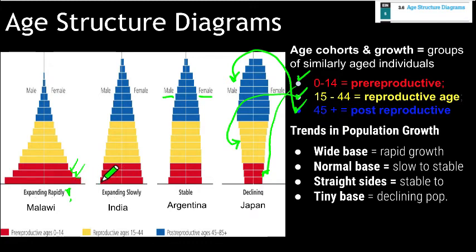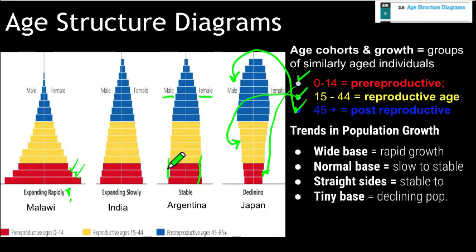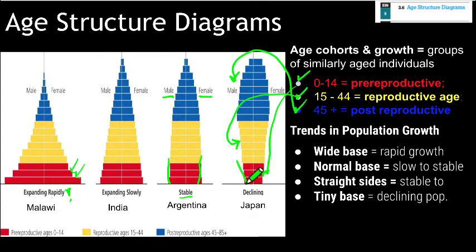As the percentage of young people decreases, so does the growth rate — this is the 'expanding slowly' category. India is still growing but not as exponentially as before, having transitioned from rapidly expanding to slowly expanding. As countries continue to develop, growth rates continue to slow and some stabilize — like Argentina, where the sides of the pyramid become flat, indicating replacement fertility, meaning each successive generation is roughly the same size. In a declining population, the bottom of the pyramid pinches inward; each successive generation is smaller, indicating the population is below replacement fertility.